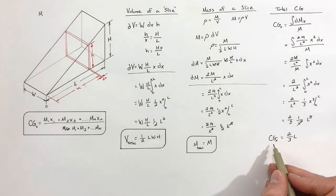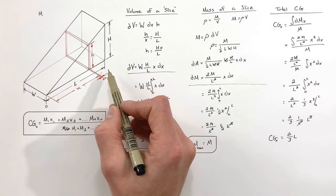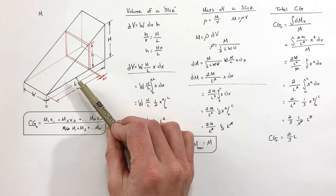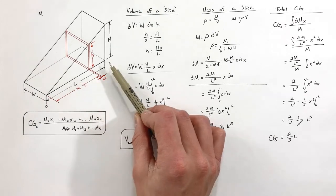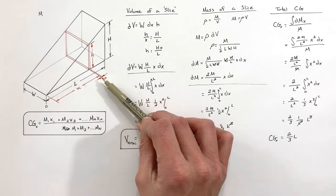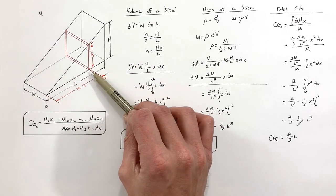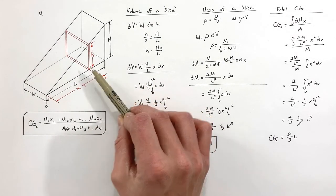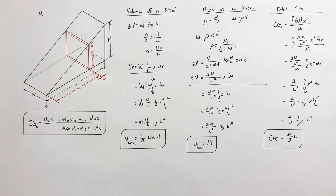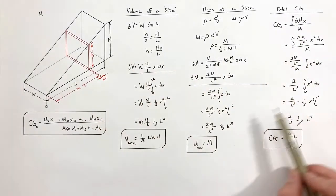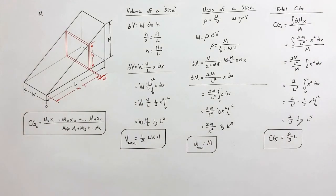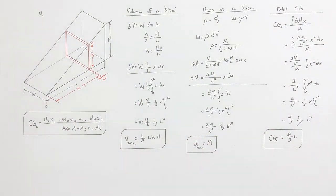The center of gravity is two-thirds of L. Going back to the beginning, we predicted it would lie somewhere beyond one-half L and less than L — and two-thirds of L is right in that region. That's the balance point of this wedge. In summary, this is how we find the center of gravity of a wedge by applying calculus to the center of gravity function.